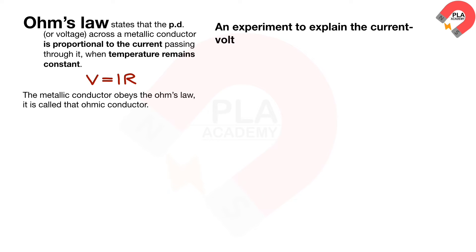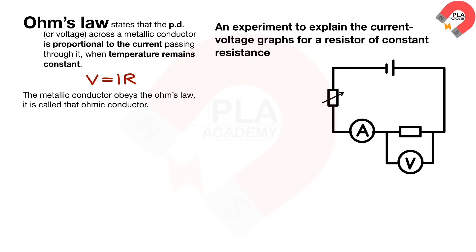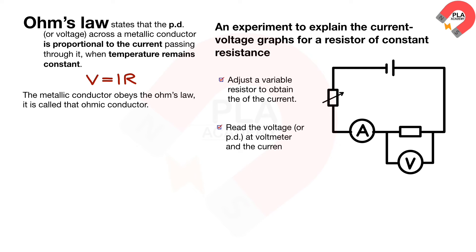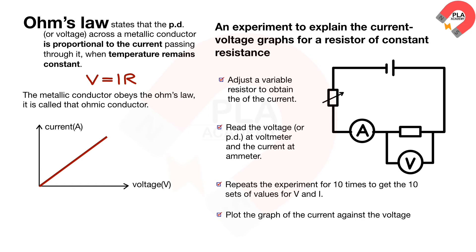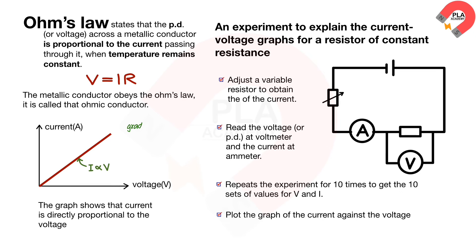An experiment to explain the current-voltage graphs for a resistor of constant resistance. Set up the apparatus as shown on the diagram. Adjust the variable resistor to obtain different values of current. Read the voltage, or PD, at the voltmeter and the current at the ammeter. Repeat the experiment 10 times to get 10 sets of values of V and I. Plot the graph of current against voltage. The graph is a straight line passing through the origin, showing that current is directly proportional to voltage. The gradient of the graph is 1 over the resistance, showing that the resistance is constant.